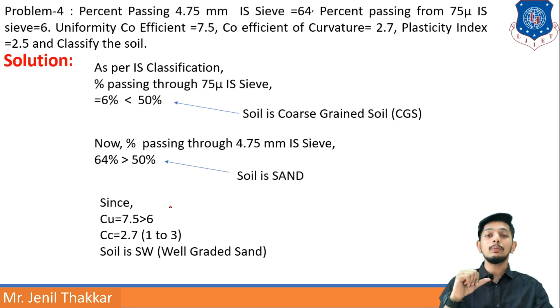And CC in range of 1 to 3, that is 2.7. So we know that from that table this is case of well-graded sand which is SW. So that's it, it is very much easier.